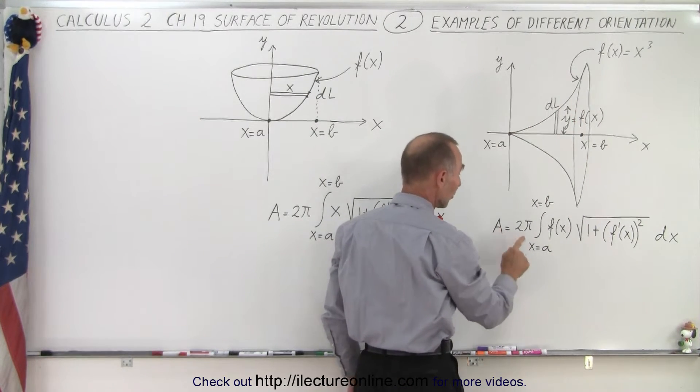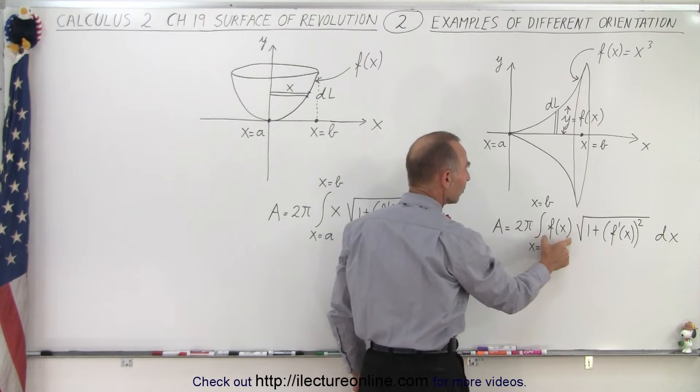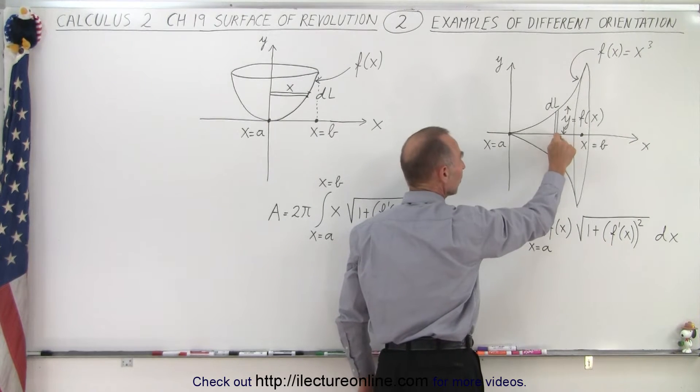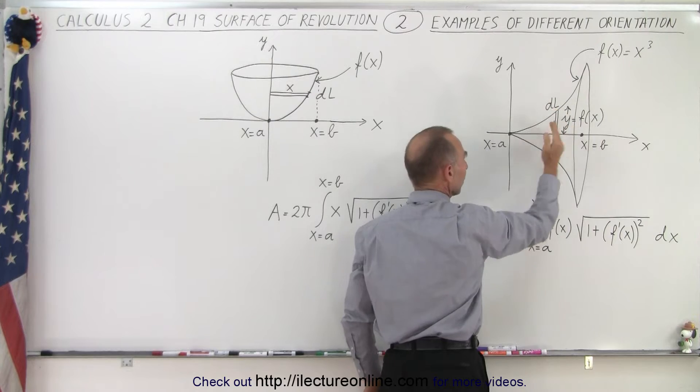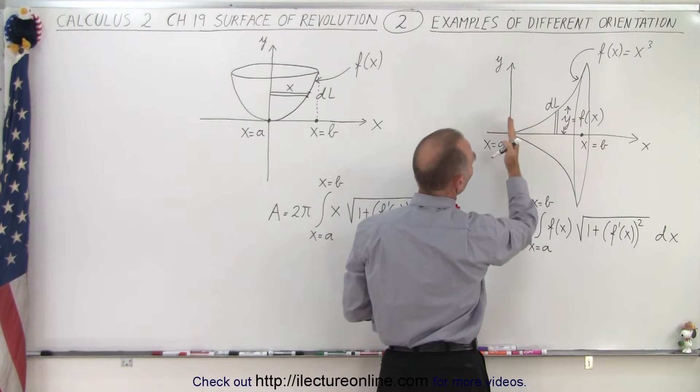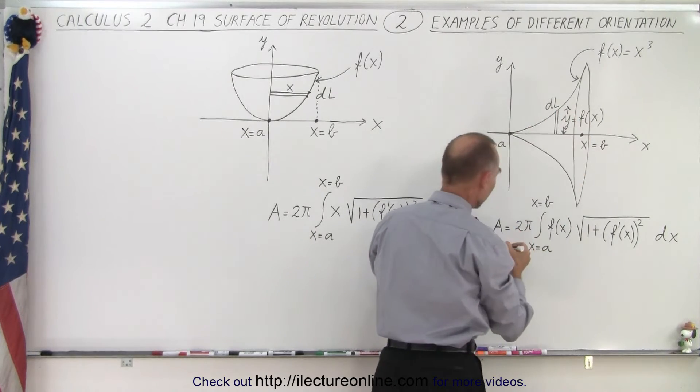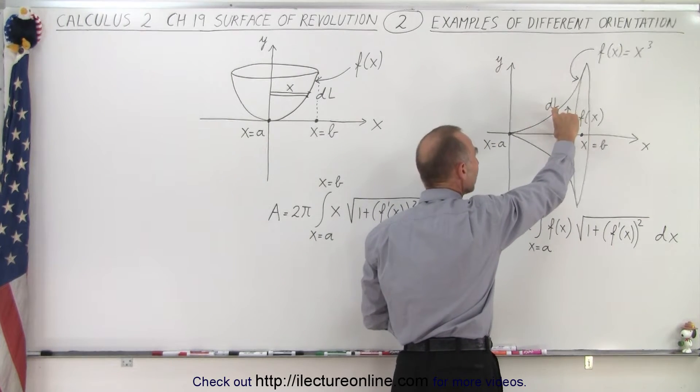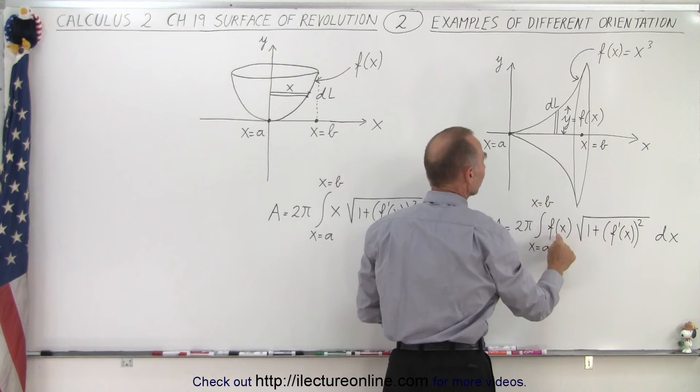So what we have essentially is two pi times the distance, the radius from the axis to the surface. Of course that's going to change as we go from x equals a to x equals b, so the radius of that essentially becomes the function of x.